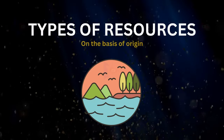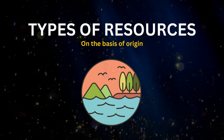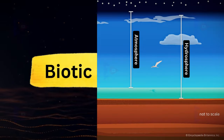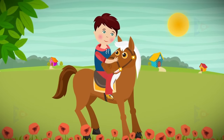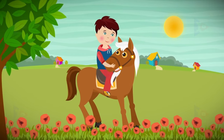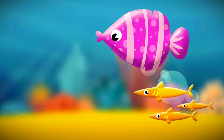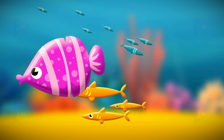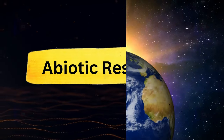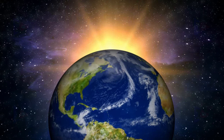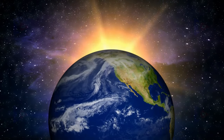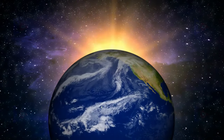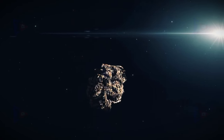On the basis of origin: biotic resources are obtained from the biosphere and have life, such as human beings, flora and fauna, fisheries, livestock, etc. Abiotic resources are composed of non-living things, for example rocks and metals.